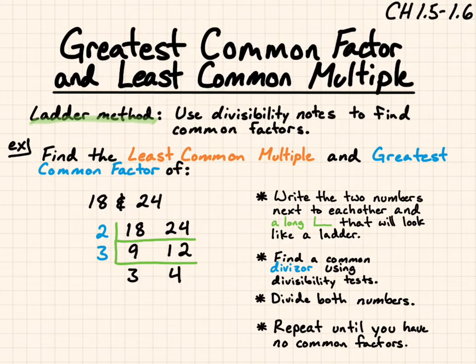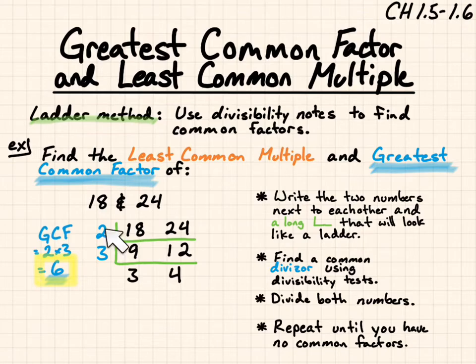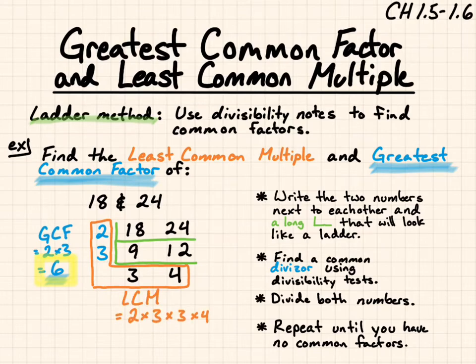So let's find our greatest common factor by multiplying the left-hand side, 2 and 3. We get 6. And then our least common multiple is multiplying all the numbers outside together. So 2 times 3 times 4. 2 times 3 is 6, and 3 times 4 is 12. So 6 times 12 gives me 72, and that becomes my least common multiple.